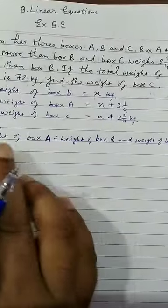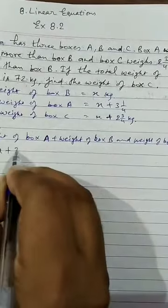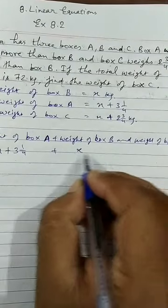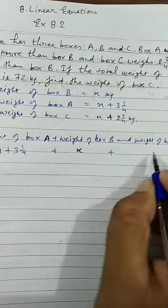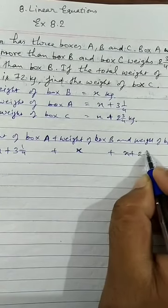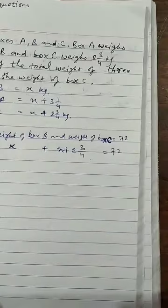So A's weight is X plus 3 and 1 upon 4. B's weight is X only. And C's weight is X plus 2 and 3 upon 4 equals to 72.